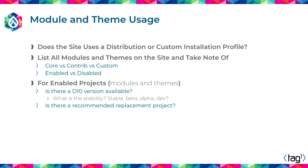In many cases, modules are no longer available or there are better approaches to do things. Just to give a concrete example, you are going to hear about field collections in Drupal 7 — they are very common. In Drupal 10, those were replaced by Paragraphs. Field collections still exist and are available, but the community now gravitates toward Paragraphs. So when you are making a migration, it is very likely that you are going to switch from one to the other.